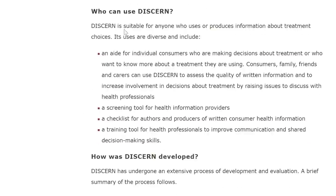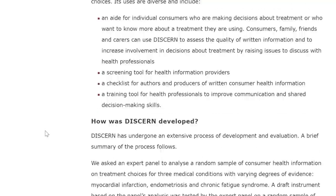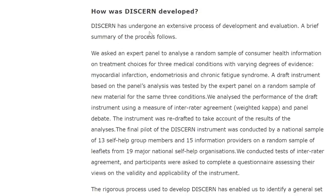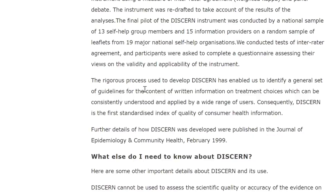DISCERN is suitable for anyone who uses or produces information about treatment choices. Its uses are diverse and include: an aid for individual consumers, a screening tool for health information providers, a checklist for authors and producers of written consumer health information, and a training tool for health professionals to improve communication and shared decision-making skills. This was an extensive process of development — evaluated, published, peer-reviewed, and validated. DISCERN is the first standardized index of quality of consumer health information.